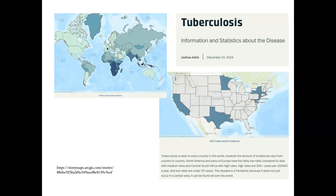The visual on the right shows U.S. tuberculosis incidence. You can see that the areas that are highest include California, Texas, Louisiana, Minnesota, New York, and areas around Washington D.C., Philadelphia, Massachusetts, and around Boston.